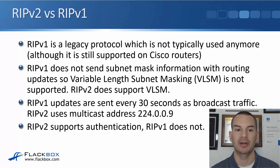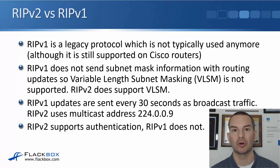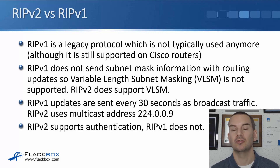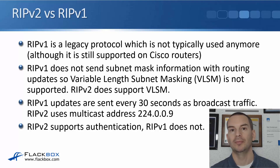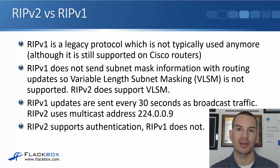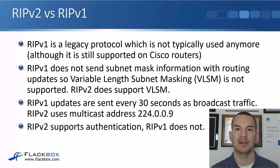RIP version 2 does support VLSM. RIP version 1 updates are sent every 30 seconds as broadcast traffic, so everything in that subnet has to process it. RIP version 2 uses multicast address 224.0.0.9, making it more efficient. RIP version 2 also supports authentication — we can put a password on both sides of the link so they will not form an adjacency unless they both have the same matching password.